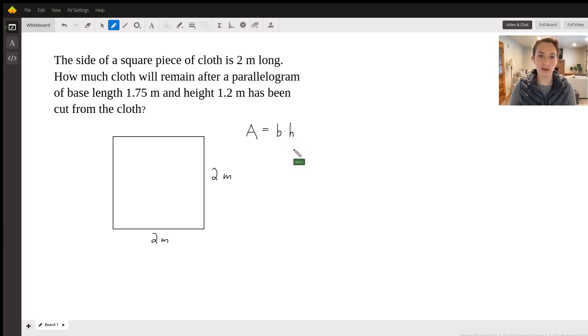But our square happens to be where the base and the height are the same, so we're going to do two times two, or two squared.